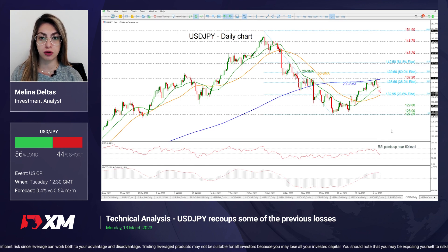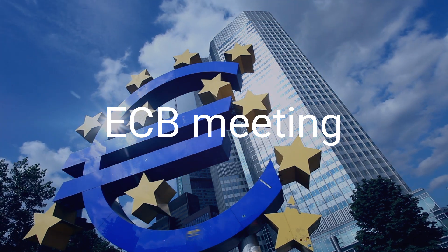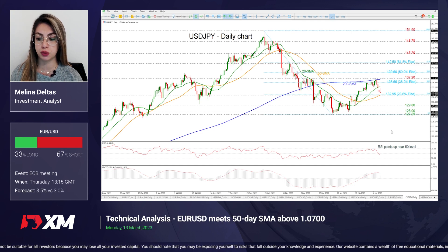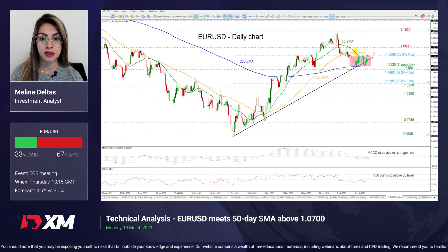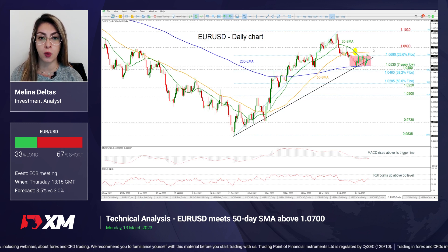Moving forward, we are going to see on Thursday the ECB meeting that will almost certainly implement its third consecutive increase of 50 basis points, bringing the deposit rate to 3%, the highest level since 2008. So looking at EURUSD now, we can see that the price is holding near the 23.6% Fibonacci level at 1.0680 after the failed attempt to surpass the 50-day SMA. So if there is a climb above it, then it may challenge the 1.08 resistance ahead of the 1.1013 barrier.